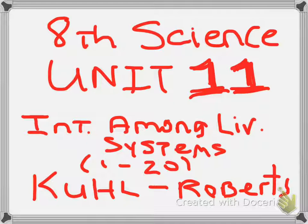Number one: According to the food web above, which organism or organisms prey on the sucker fish? A) raccoon and muskrat, B) trout and muskrat, C) watercress and cattails, D) only trout.